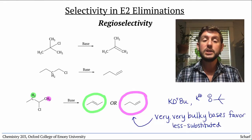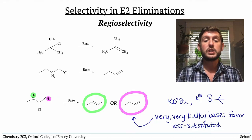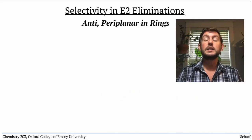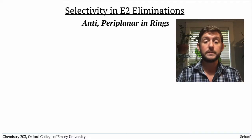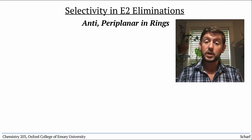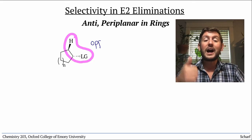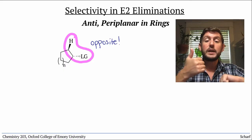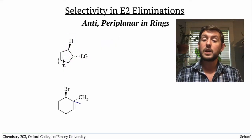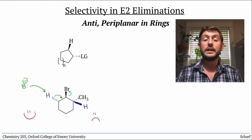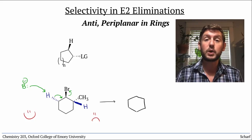An additional regiochemical consideration is that in the E2 reaction, the proton that is being removed must be anti- and periplanar to the leaving group. In cyclic structures, this requires that the H and the leaving group be on opposite faces of the ring. So this compound only undergoes elimination on the less substituted side, because the more substituted side doesn't have a proton in the proper orientation.